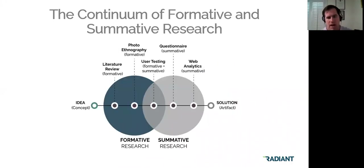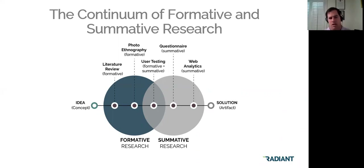This graphic shows a continuum with the idea or concept on the left and the solution as an artifact on the right, showing where different types of research fit — formative versus summative. A literature review in scholarly literature is a type of formative research. Ethnography also fits in that space. User testing is summative research, but if you take the design thinking cycle as a cycle rather than a linear trajectory, it could also serve as formative research to test and reiterate for the next iteration. Questionnaires and web analytics are typically used for summative research.